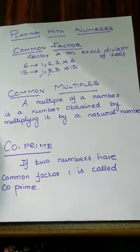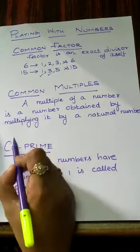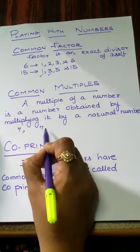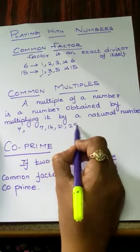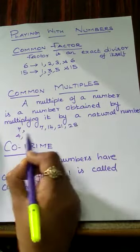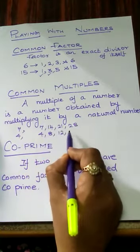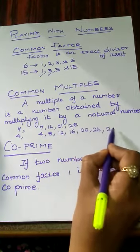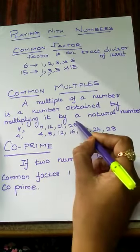Next, common multiples. A multiple of a number is a number obtained by multiplying it by a natural number. Suppose we select the number 7. The multiples of 7 are 7, 14, 21, 28, and so on. Next, the multiples of 4 are 4, 8, 12, 16, 20, 24, 28, and so on. The common multiple here is 28.